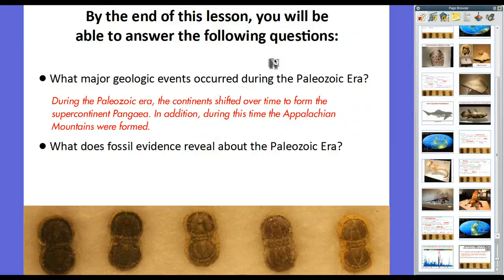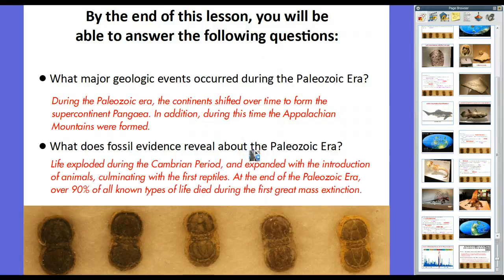What does fossil evidence reveal about the Paleozoic Era? Life exploded during the Cambrian Period — we went from essentially nothing to life all over the place in an extremely short time, expanding with the introduction of animals and plants, culminating with the first reptiles during the Permian Period. At the end of the Paleozoic Era, over 90% of all known types of life died during the first great mass extinction. Next time, we'll be talking about the Mesozoic Era — everybody's favorite era, because it's the era of dinosaurs!